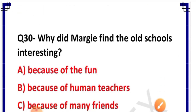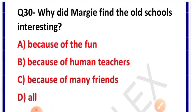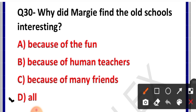Question number 30: Why did Margie find the old schools interesting? Options: because of the fun, because of human teachers, because of many friends, all. Correct answer is option D — all. In sab ki wajah se: purane schools ke time mein moj-masti thi, human teachers the, many friends the — in sab ki wajah se Margie ne paya ki jo old schools the woh bahut interesting the.